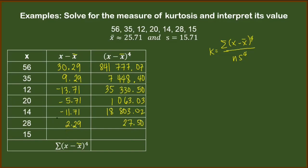And finally, we have 15 minus 25.71. We will arrive with negative 10.71. Raise this to the 4th power. We have 13,157.03.